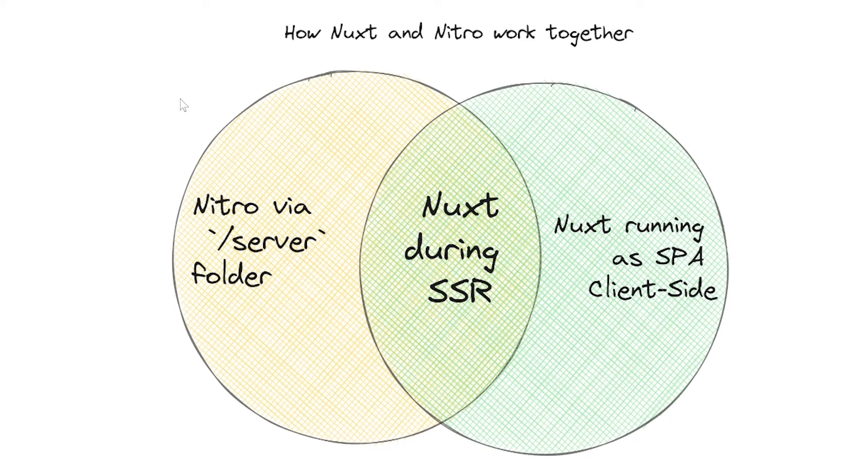Nuxt and Nitro both have their own responsibilities, but they work together hand-in-hand to enable server-side rendering, caching, route rules, and proxying as well — I will cover that in the next video. I've covered this in a few blog posts too; for example, a blog post about a Sentry integration. Sometimes it's even advisable to have an integration for both the server part and the client part, for error logging and tracing — that can really help a lot.